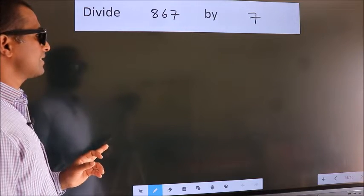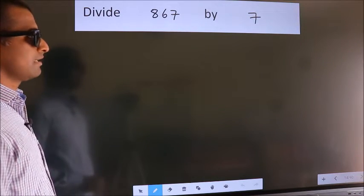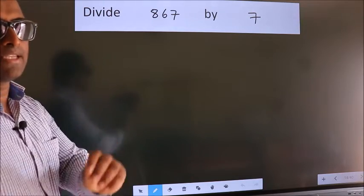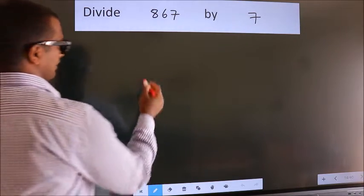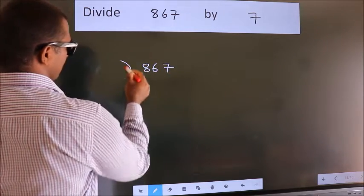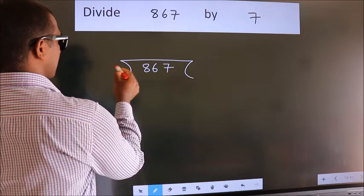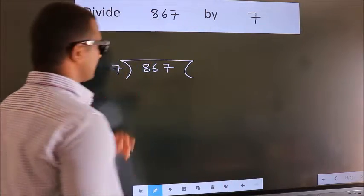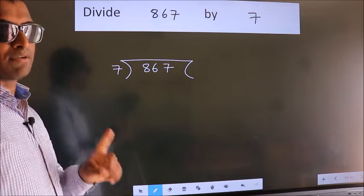Divide 867 by 7. To do this division, we should frame it in this way: 867 here, 7 here. This is your step 1.